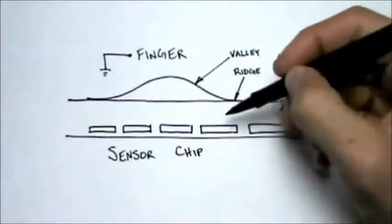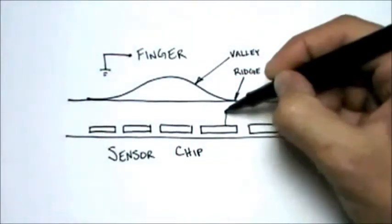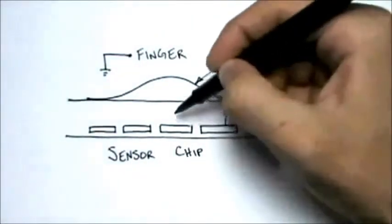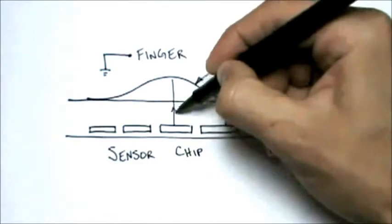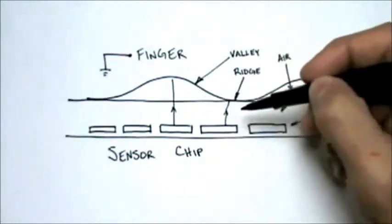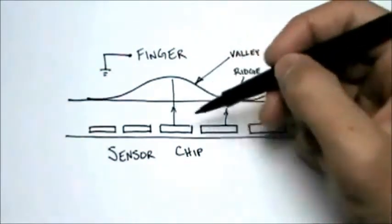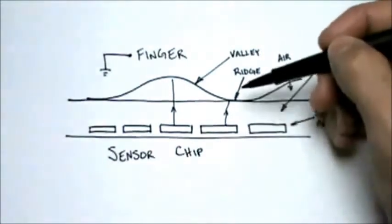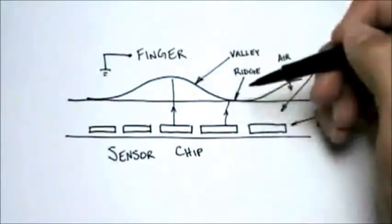When charge is applied to the sensor plates, then an electric field propagates to those ridges and valleys. The distance that those field lines have to go through is obviously different from one sensor to another, depending on whether it is covered by a ridge or a valley.